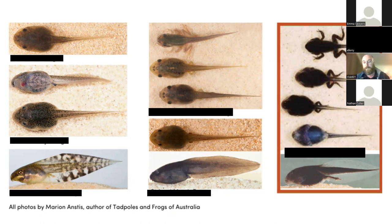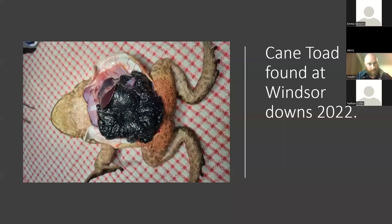The next shot shows a dissected cane toad — if anyone doesn't want to see that, look away for a moment. It's just to highlight the amount of eggs a single toad can carry. That is the end of my presentation, thank you very much. Thanks very much, Dan — you learn something new every day. It was really interesting to see the differences between tadpoles and the morphology of native frogs versus cane toads. Now I'll move on to the final presentation for this evening — let me share my screen.